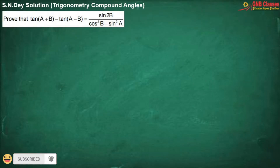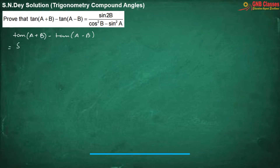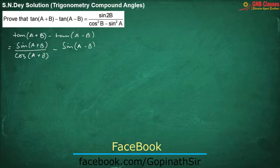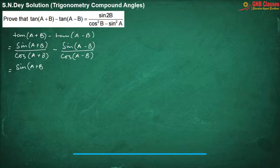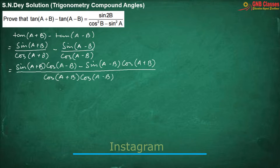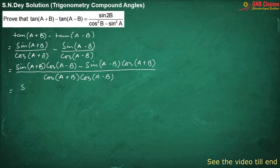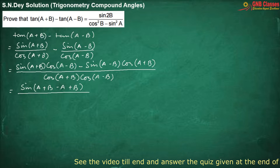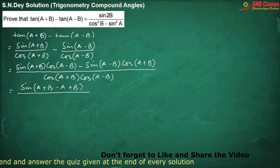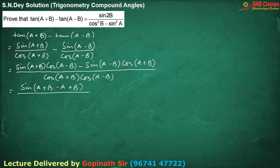In this problem, on the left hand side, I am converting tan in terms of sin and cosine. After taking LCM, in the numerator we are applying the formula sin A cos B minus cos A sin B, which equals sin A minus B. In the denominator, cos A plus B into cos A minus B can be written as cos squared A minus sin squared B, or cos squared B minus sin squared A. To get the desired result, I am writing cos squared B minus sin squared A.